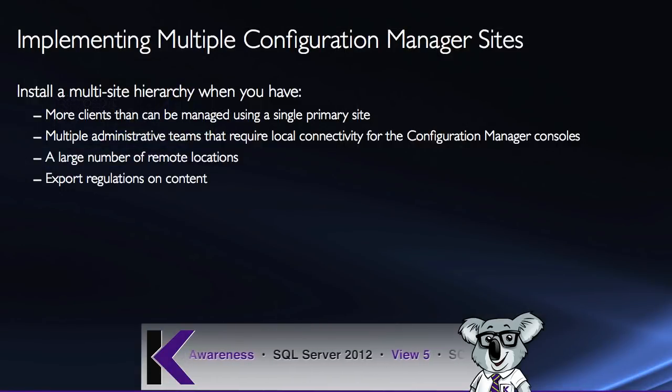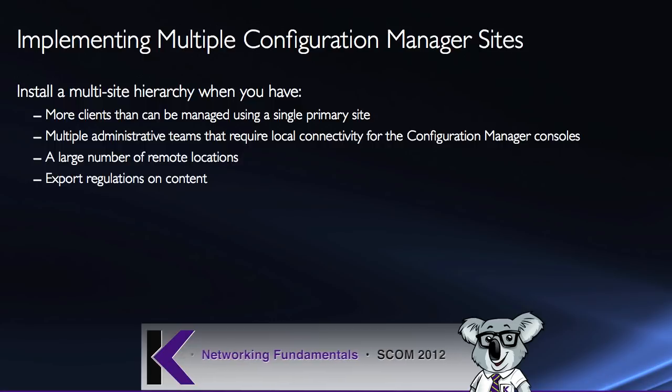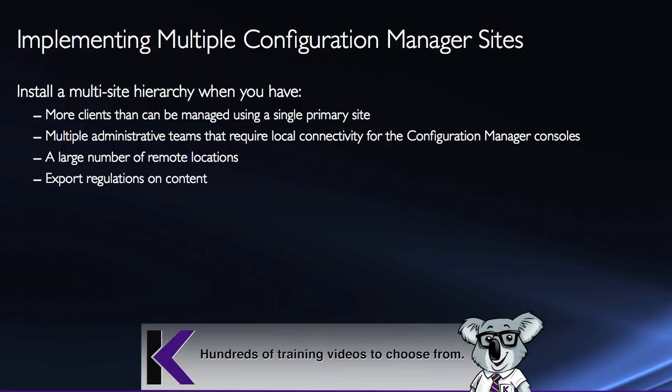Another consideration is a large number of remote locations, and also export regulations on content. For example, in the banking world, when dealing with systems that handle client data in Switzerland versus systems that handle client data in the US, there are regulations around how data can be exported. As we're controlling the flow of that data, we may consider this type of hierarchy.